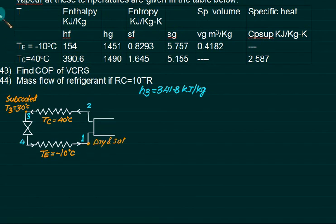Very first thing, at point number 1, it is dry and saturated, corresponds to minus 10. So you have to take the table at minus 10, column of Hg is 1451. So this is H1.